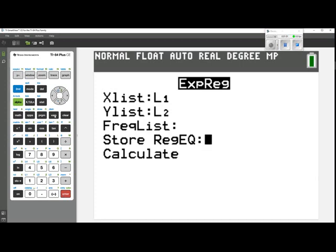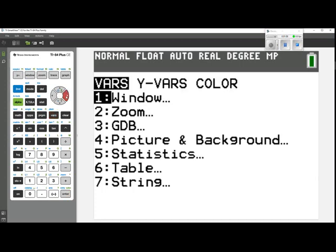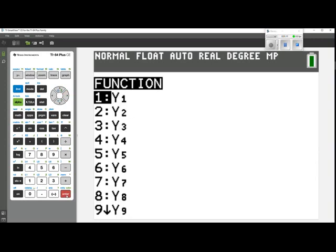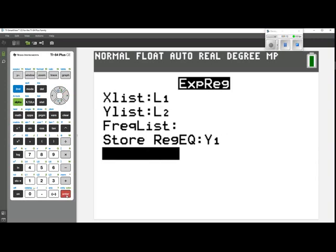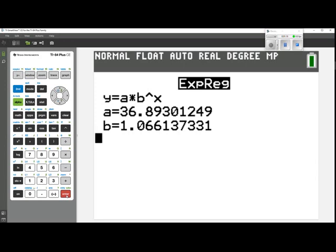So from here we go to the vars button, over to y variables, choose function, and choose y1. And now we can calculate. So these are the values that would go into our exponential model. We have approximately y equals 36.89 times 1.07 to the x power.